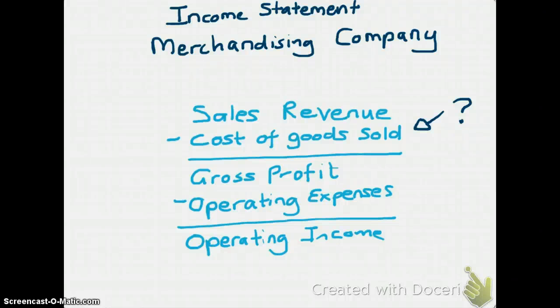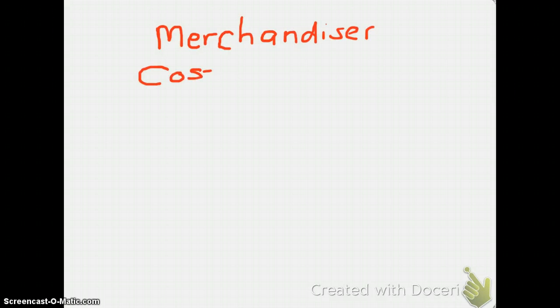In this section, we'll take a look at how cost of goods sold is calculated for a merchandising company and a manufacturing company. If you remember from Accounting 1, we get cost of goods sold from our inventory account.